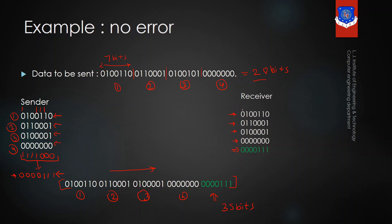After arranging the data into segments, the receiver will perform the binary addition. 1 plus 1 is 0, plus 1 is 1, carry will be generated. 1 plus 1 is 0, plus 1 is 1. 1 plus 1 is 0, plus 1 is 1. Then 1, 1, and 1 plus 1 is 0, plus 1 is 1. After performing the binary addition, the answer will be complemented using the one's complement, and you will get all zeros. At the receiver side, if you are getting all zeros after performing the one's complement, the data is received successfully and there is no error.